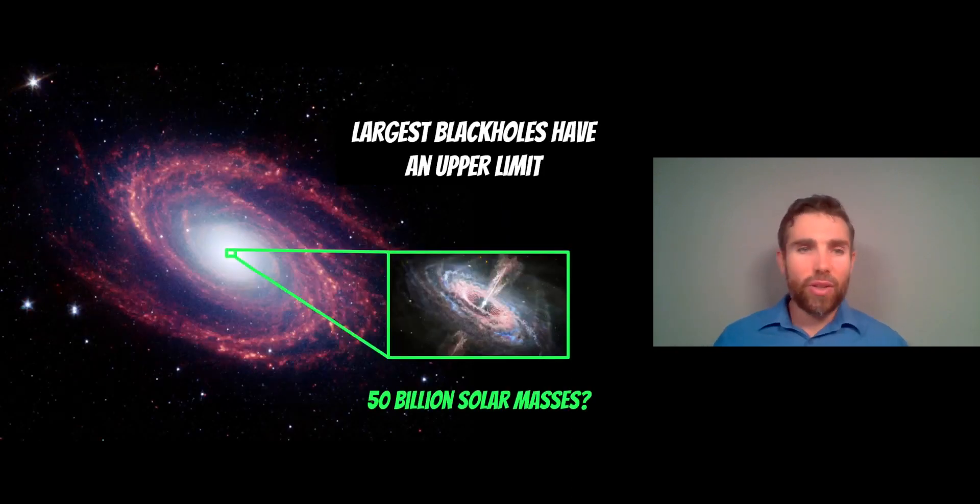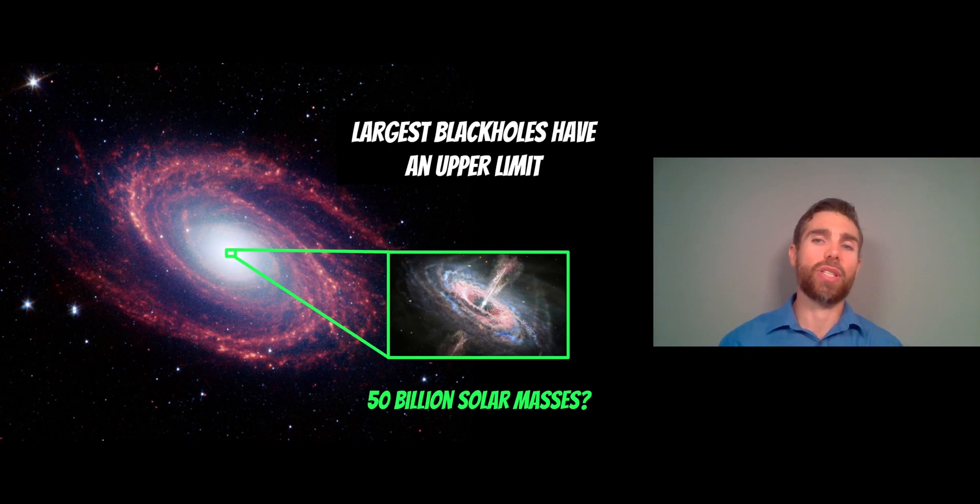On the other side, you have supermassive black holes - the largest black holes. It appears there is an upper limit, at least observationally, and there's theory to somewhat support that. It's about 50 billion solar masses - the upper limit to supermassive black holes. We'll look at why that's the case in this video.